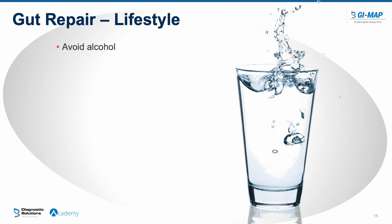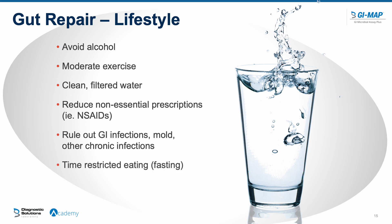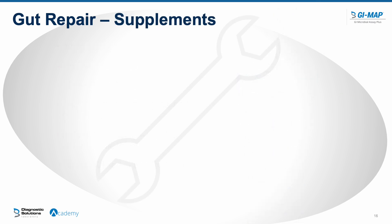For lifestyle interventions: avoid alcohol, which can lead to gut permeability; keep exercise vigorous but moderate; ensure good water intake; reduce non-essential medications like NSAIDs, which can affect the gut barrier. Rule out gut infections such as chronic Klebsiella, mold, or candida. Time-restricted eating or intermittent fasting has also been shown to positively benefit gut barrier function.